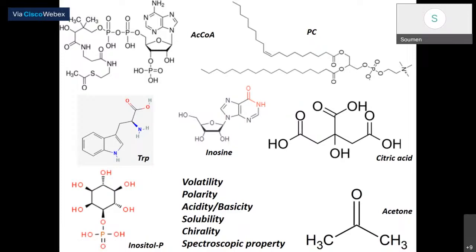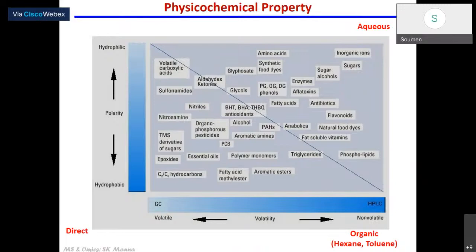This is a chart which shows: as you go to the right, there are less volatile compounds, and as you go up along the Y axis, there are more hydrophilic compounds. If you have something which is less volatile and hydrophilic in nature, you can have aqueous-based extraction. If you have something which is less volatile but very hydrophobic, then you have to go for an organic solvent-based extraction. On the other hand, if you have something which is very volatile, particularly volatile, then you may have to do the analysis directly — and that is the range where we have volatomics-type analysis, directly analyzing volatile compounds.